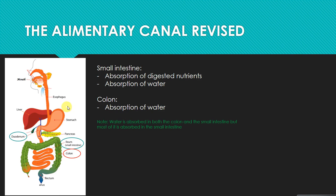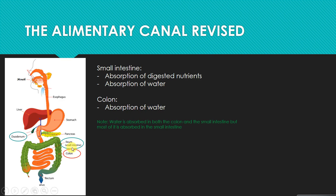As we've stated before, the small intestine is important for the absorption of digested nutrients that we've covered in the last topic, and also the absorption of water. Going further down in the digestive system, we've got the colon, which also has the function of absorbing water. However, it's important to note that although both structures absorb water, the majority of it is absorbed in the small intestine, not the colon.